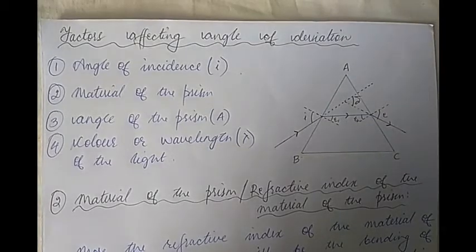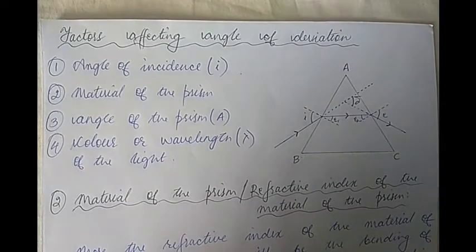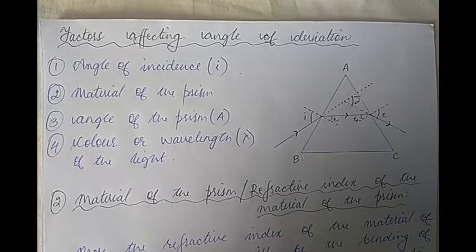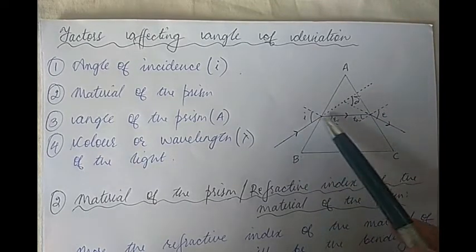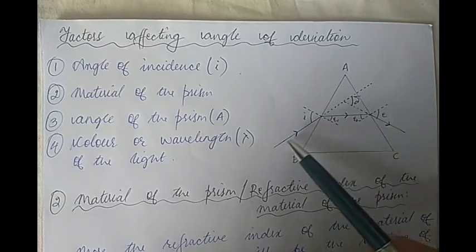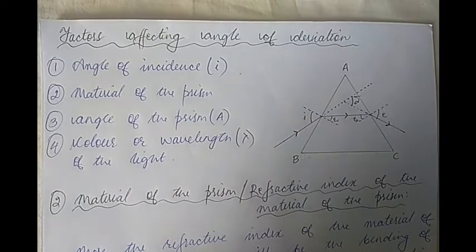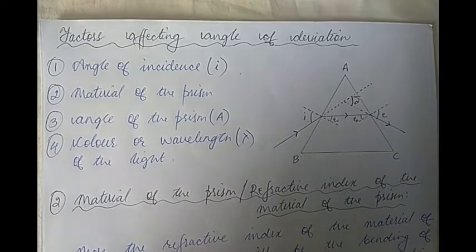In this video, we are going to look at the factors affecting angle of deviation. You already know that this angle, represented by delta, is the angle by which the ray of light deviates from its original path after it enters the prism — that is what is called the angle of deviation. Basically, there are four factors.